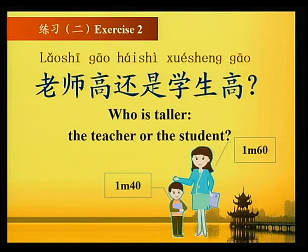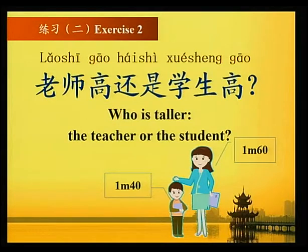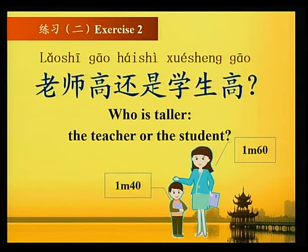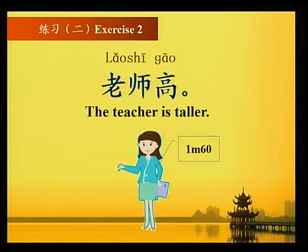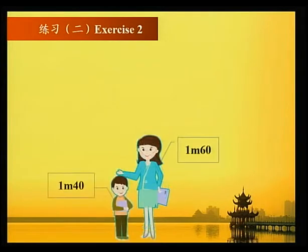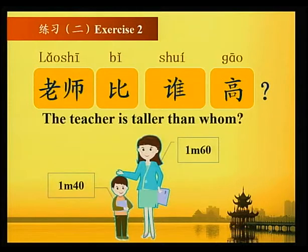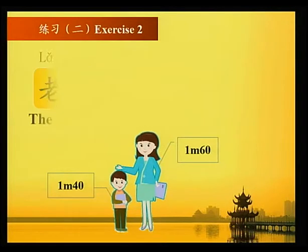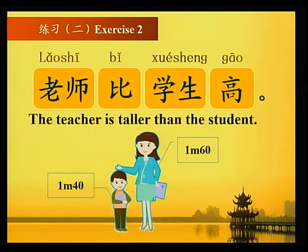练习二 Exercise two: 老师一米六，学生一米四。老师高还是学生高？Who is taller, the teacher or the student? 老师高 — the teacher is taller. 老师比学生高 — the teacher is taller than the student.